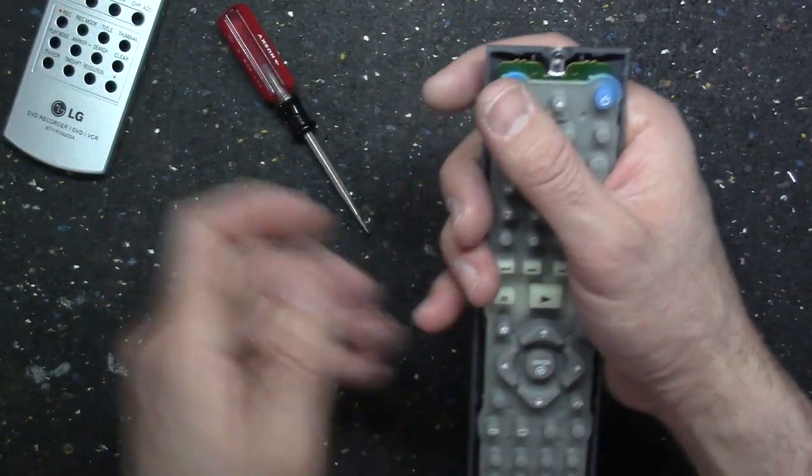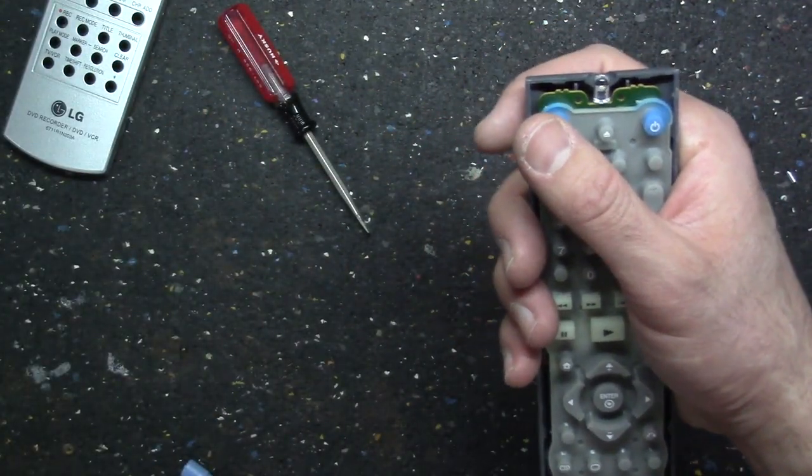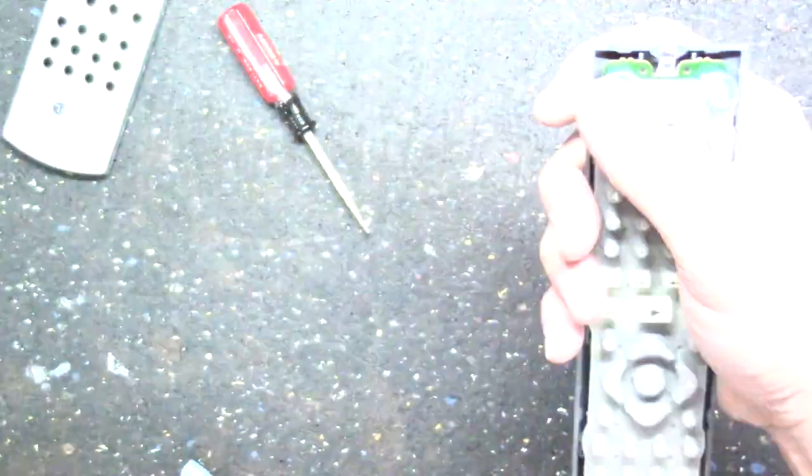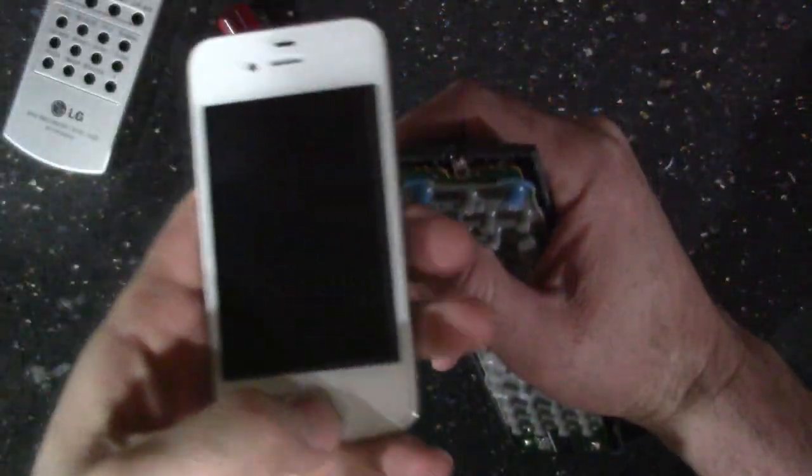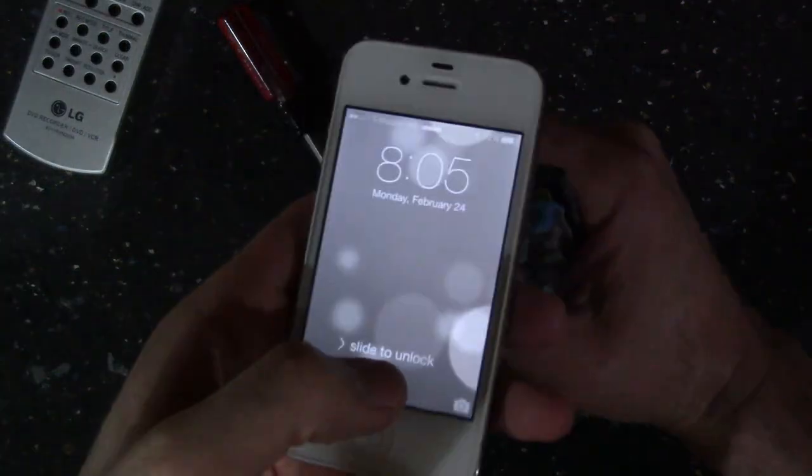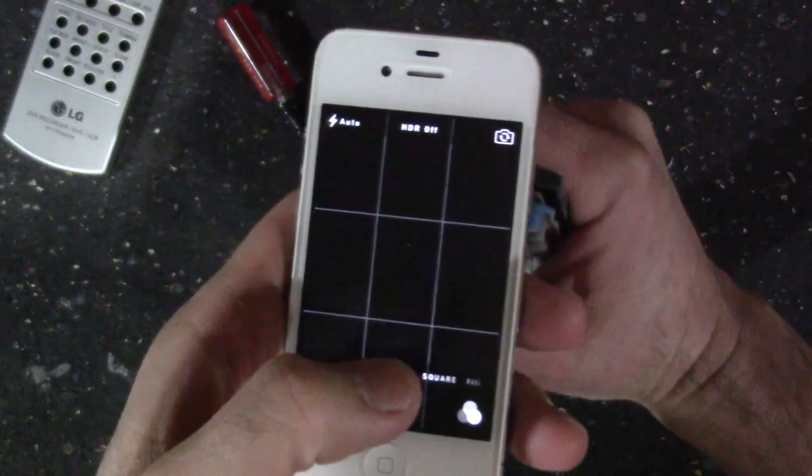You don't have to fully assemble the remote. You could just put the keypad aligned up onto the little button contacts. Turn off your light and point it at the camera again.